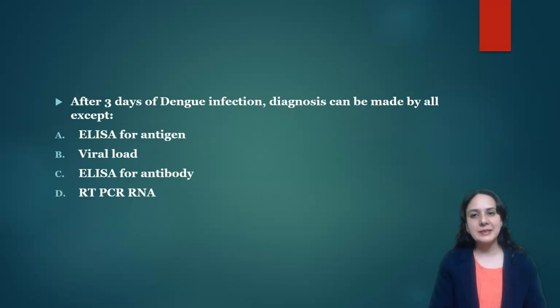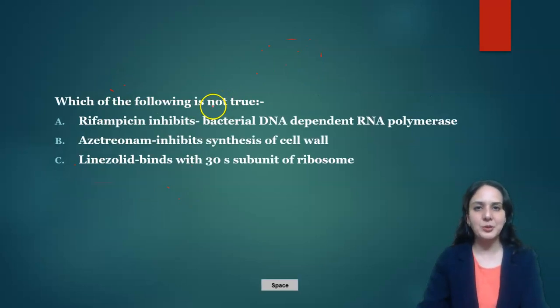Next question was: after three days of dengue infection diagnosis can be made by all except? We know that for the dengue infection it takes four to five days to form antibodies. So antigen will be present, viral load can be seen, RT-PCR can be done, but antibody is not useful to analyze for antibody at three days. So we have to wait for some more days.